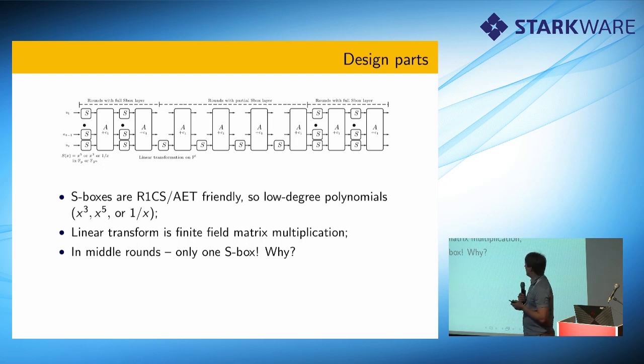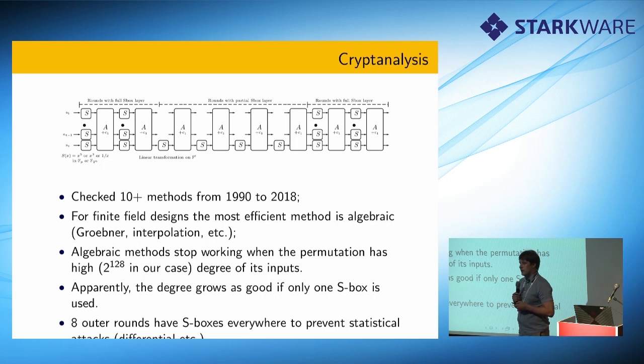S-boxes are friendly to almost everyone. They are friendly to R1CS, they are friendly for Starks. They are friendly to regular code, because we use only low degree exponents or just inversions, which are like divisions, which are also fast. The S-box, one S-box in the middle, it's because we explored all the possible, all the existing cryptanalysis methods since 1990 or older. Regular statistical methods are prevented by methods like differential or linear cryptanalysis - they are prevented by outer rounds with full S-box layer. We don't need many of them. We know exactly how many rounds we need. Actually, six rounds are sufficient, but we use eight, just in case.